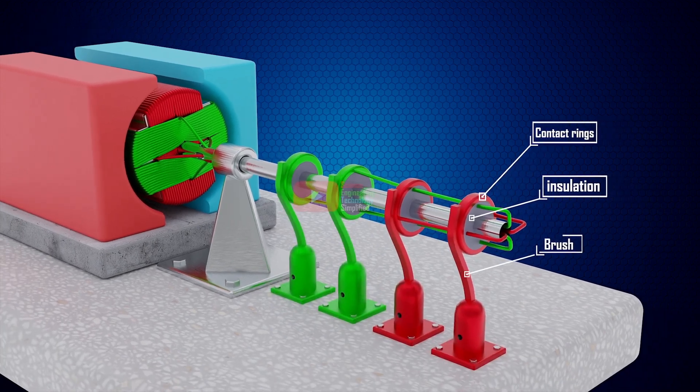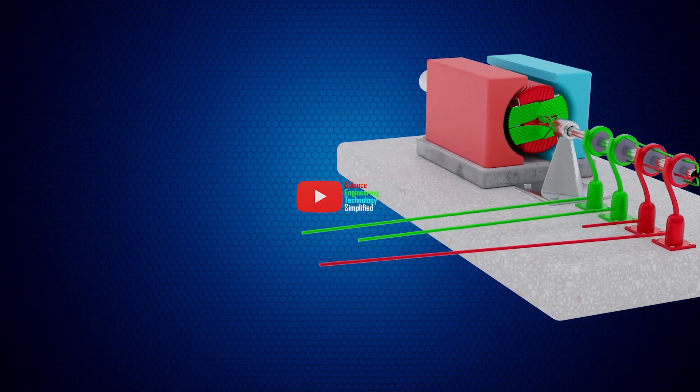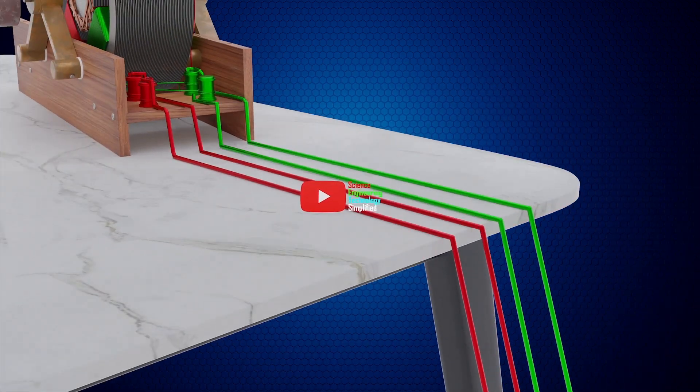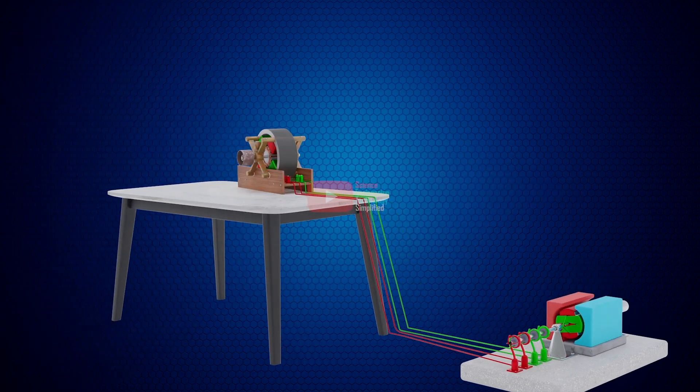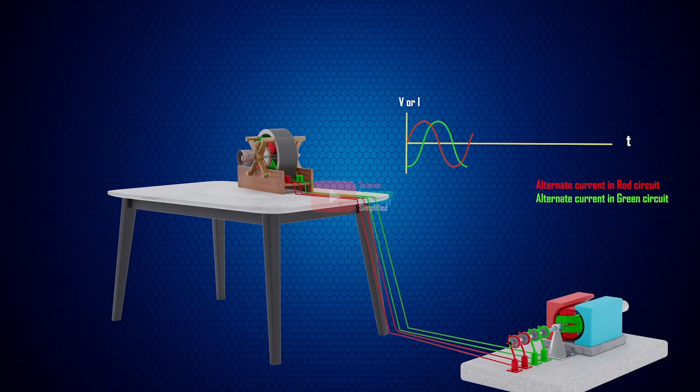Then we have brushes that bear upon the rings. These brushes are connected to the terminals of the motor. In this way, Tesla removed the useless commutator in his design. Therefore, alternating current will now flow through these wires.